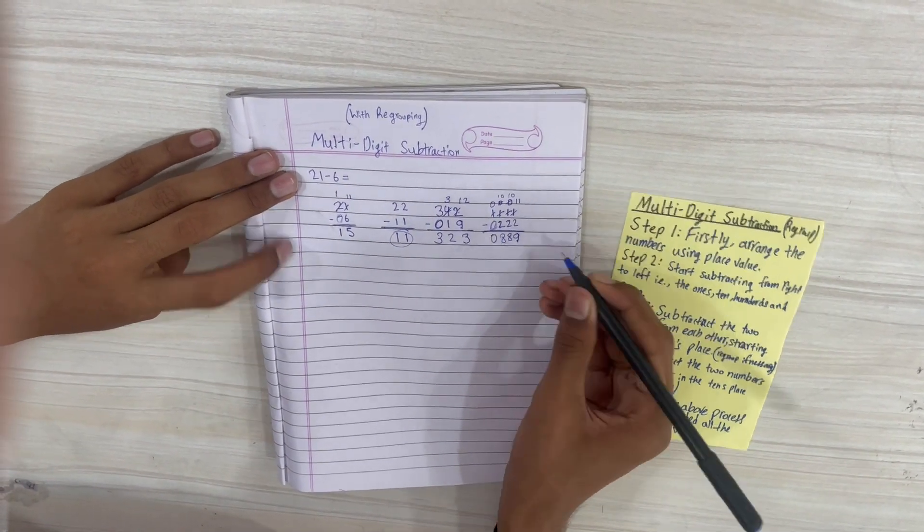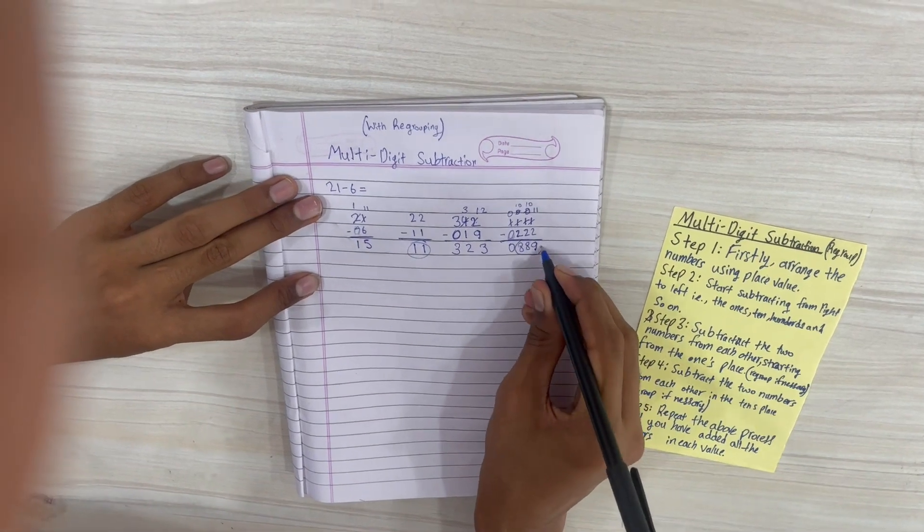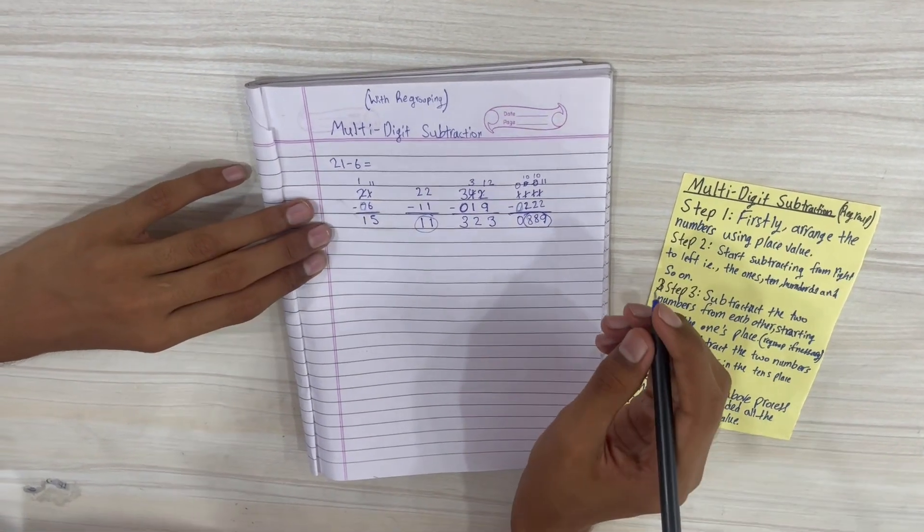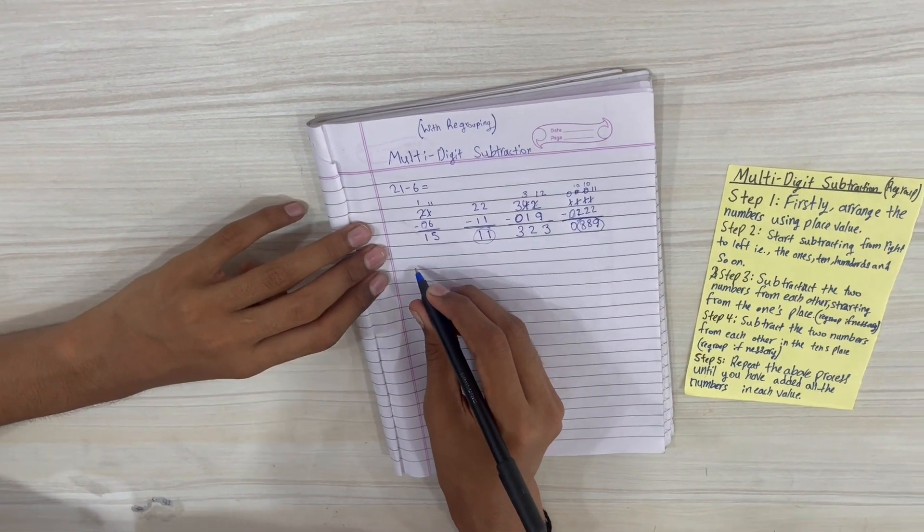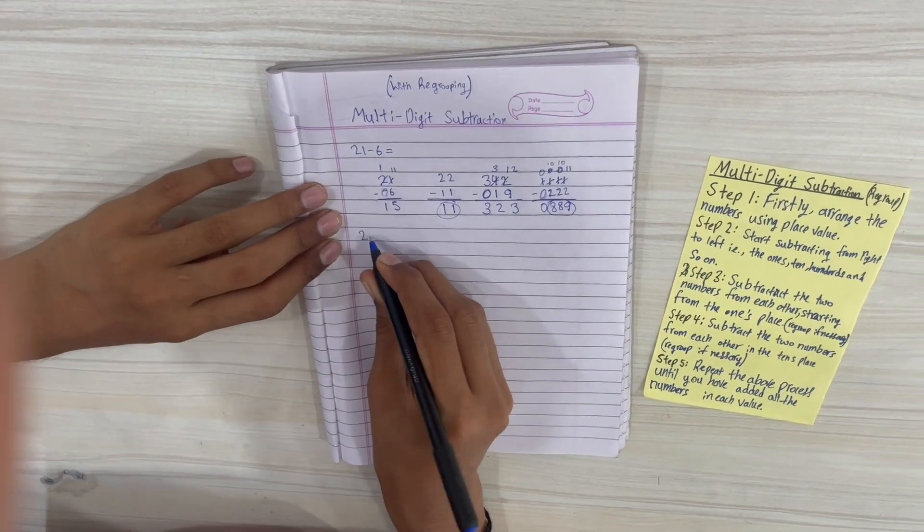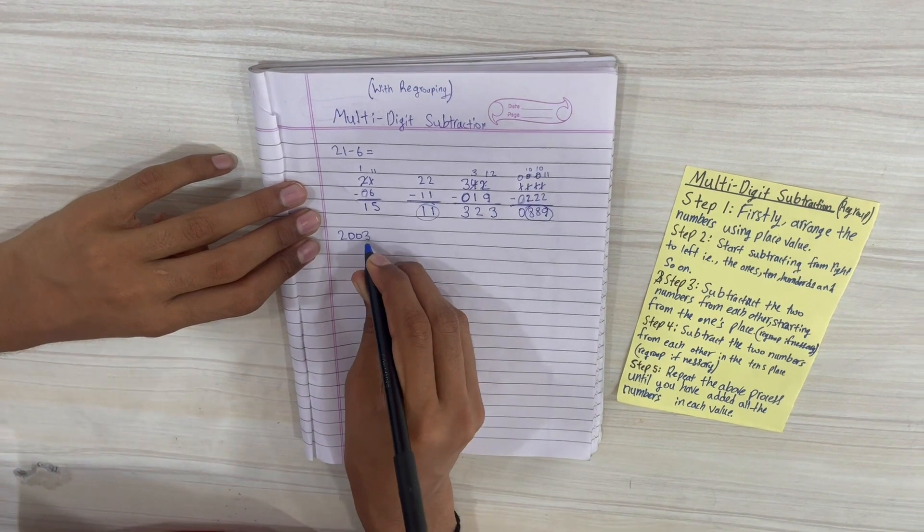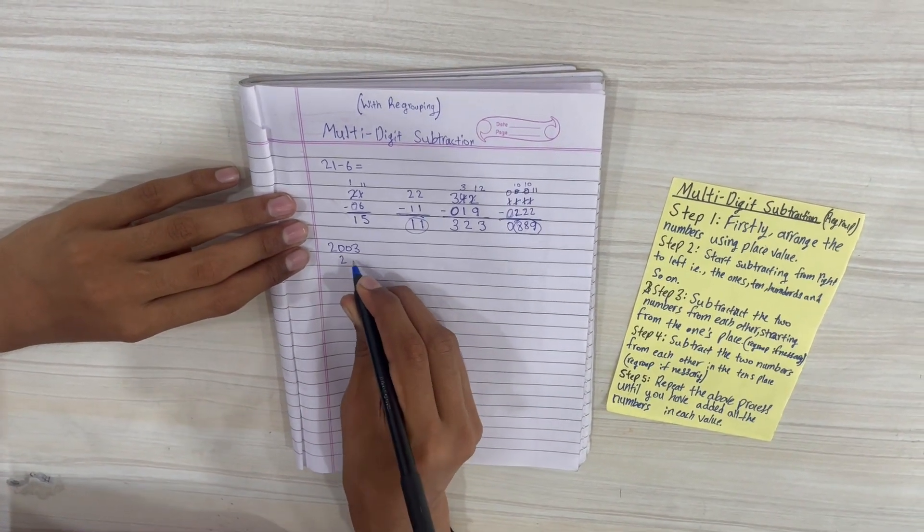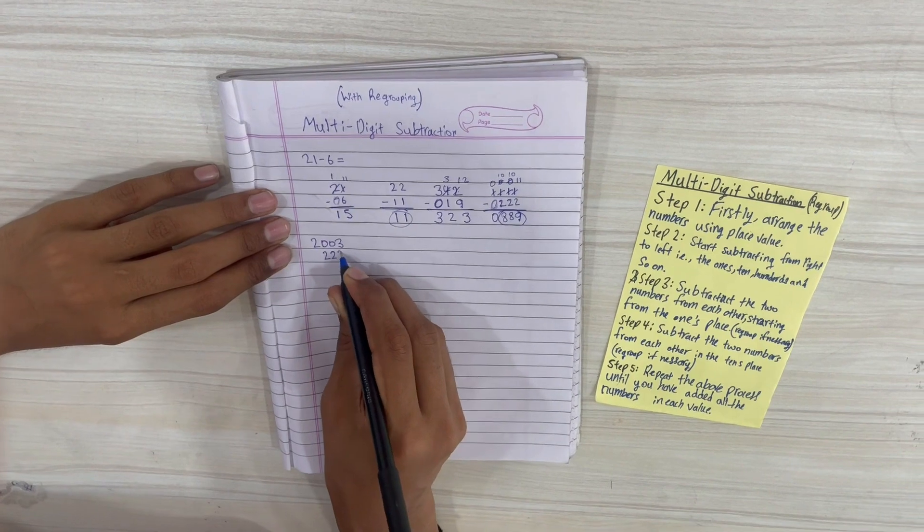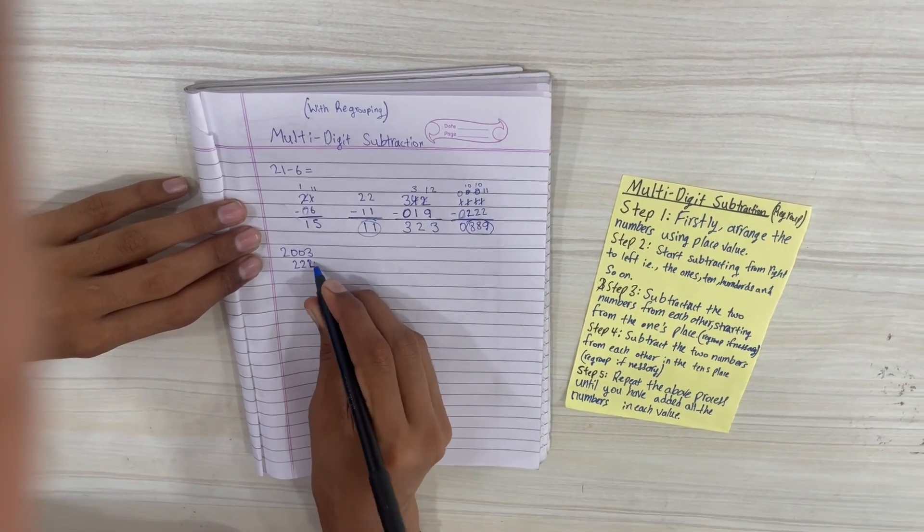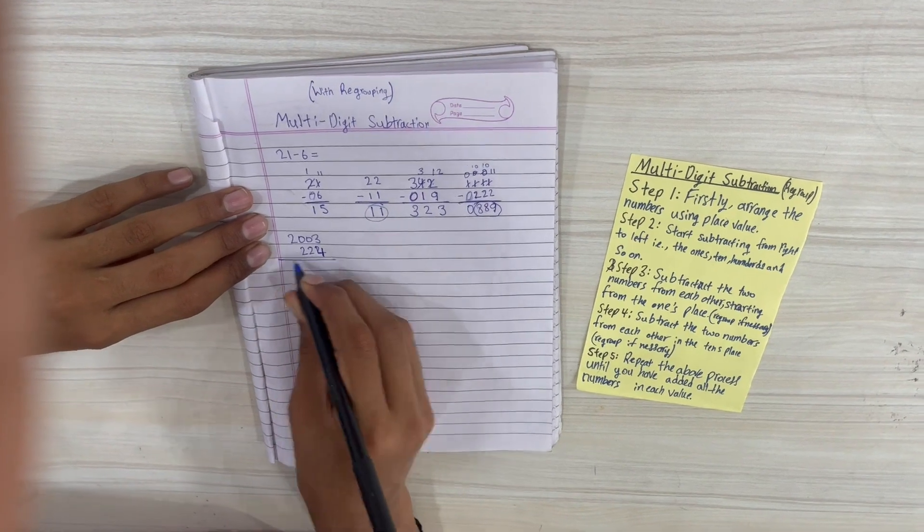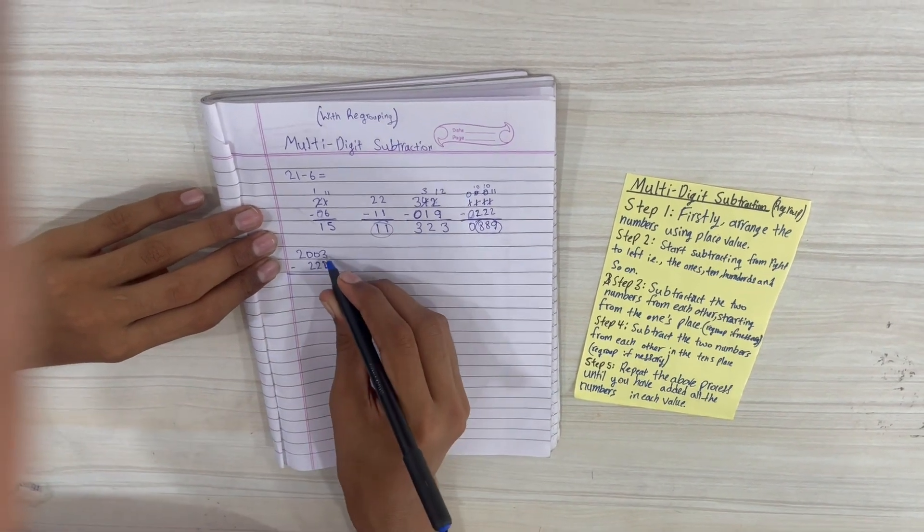Now we'll learn about a different kind of problem: 2003 minus 24. Let's make it 24 for convenience. We cannot subtract 3 minus 4, so we'll be needing to jump to the next place which is also a 0. We'll go to the next place which is again unfortunately a 0, so we go to the next place which is a 2.